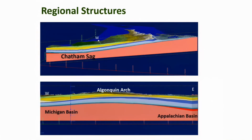The next few slides show examples of how the model can be used to visualize subsurface geology. This one is showing regional structures: the Chatham Sag, Michigan Basin, and Appalachian Basin, separated by the Algonquin Arch.